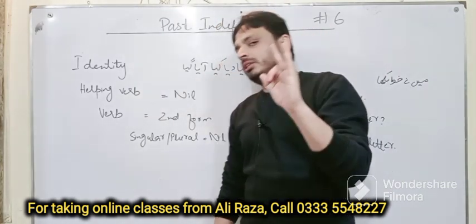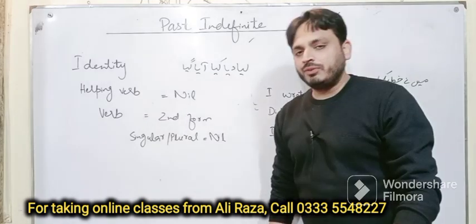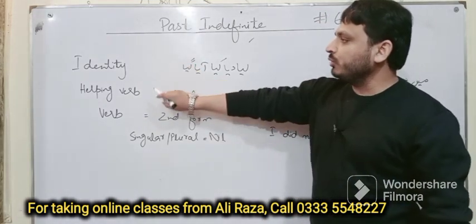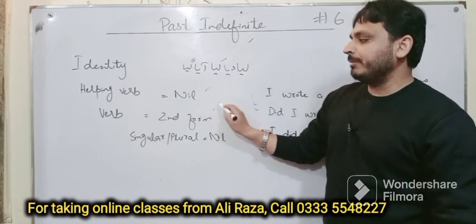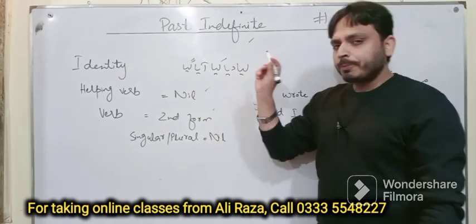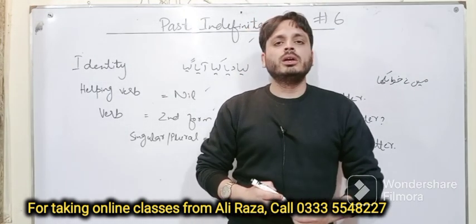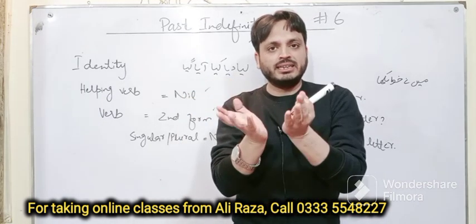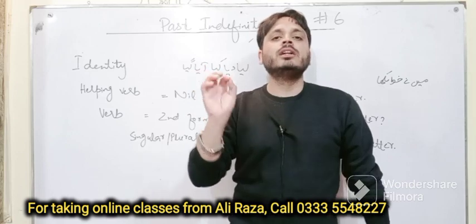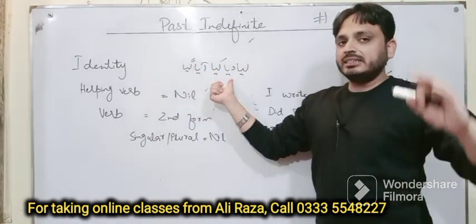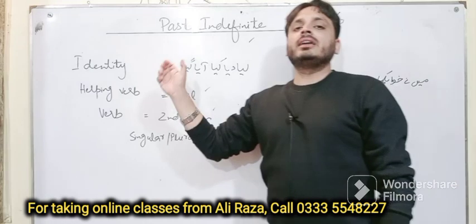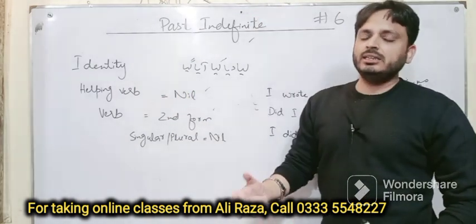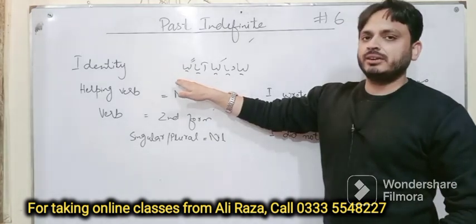Once you have confirmed this is Past Indefinite tense, you have to apply this formula: subject, helping verb, and then verb (singular/plural). For Urdu students who want to identify it in Urdu: any tense which ends in 'liya, diya, kiya, aya, gaya' — jo bhi tense is kisam ke alfaaz par khatam ho — instantly decide that this is your Past Indefinite.